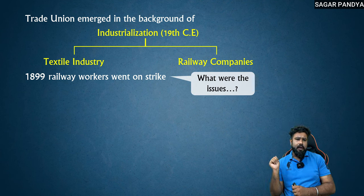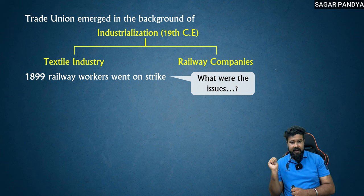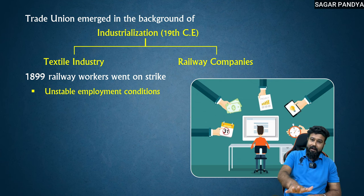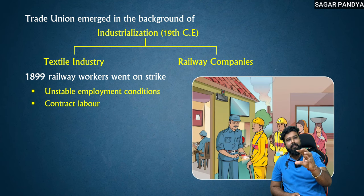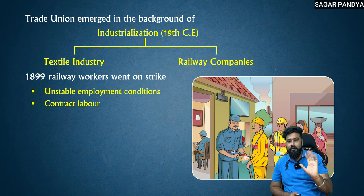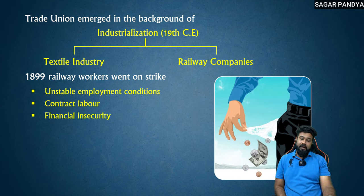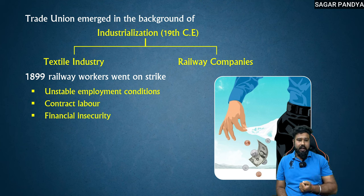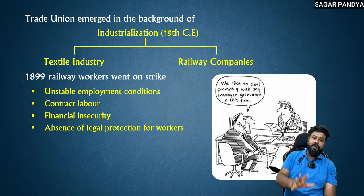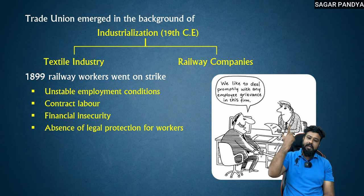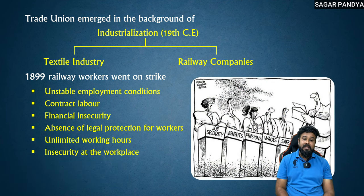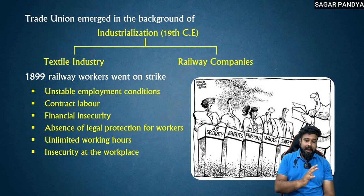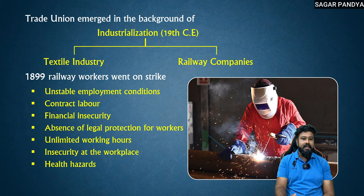Sir, what was the main issue — what problem did railway workers face that made them go on strike? There were unstable employment conditions for railway workers in 1899. They were contract laborers — work for 6 months and get paid this much — but no stability, financial insecurity. For the other 6 months they'd be sitting at home — would that work? No. There was also absence of legal protection — nothing was written officially on paper. And there were unlimited working hours. At the workplace, there were insecurities — health hazards, accidents — all of this happened.